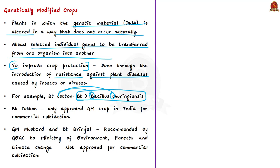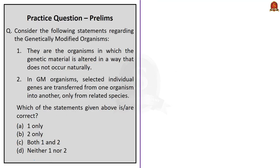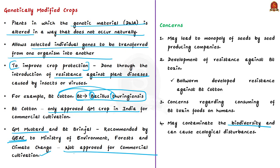GM crops have helped farmers worldwide to improve farm yield and protect crops from pests and viruses. However, there are widespread concerns regarding effects on biodiversity and harmful impacts on humans. BT cotton, a non-food crop, is the only GM crop approved by the Indian government. GM mustard, a food crop approved by the Genetic Engineering Appraisal Committee, was subsequently not cleared by the Environment Ministry for commercial cultivation. Similarly, in 2010, BT brinjal cultivation was banned due to protests from farmers and environmental activists. Only GM mustard and BT brinjal have been recommended by the Genetic Engineering Appraisal Committee to the Ministry of Environment, Forest and Climate Change. Now the central government has selected eight states to conduct field trials for BT brinjal to study its effects before approving commercial cultivation.